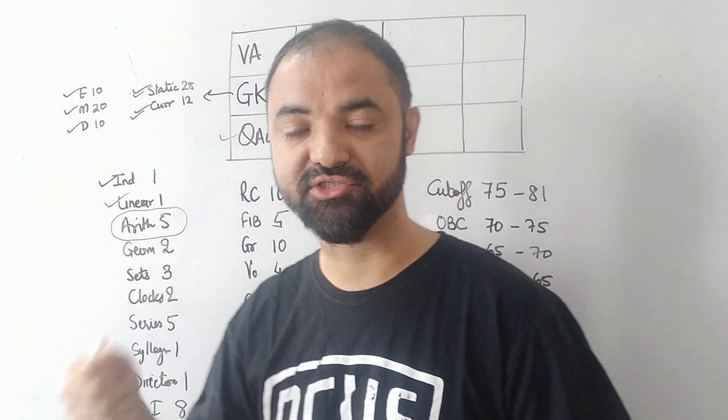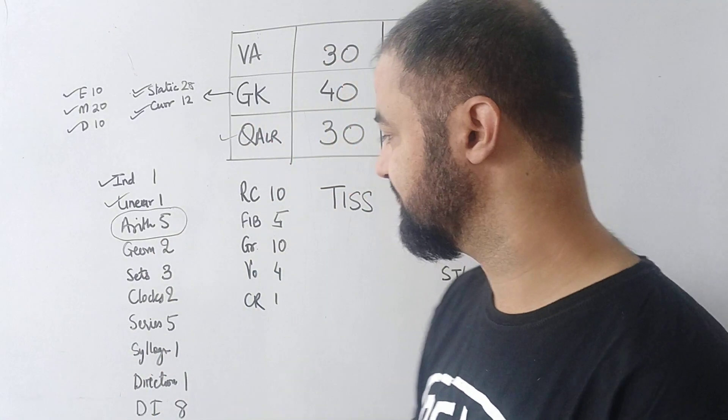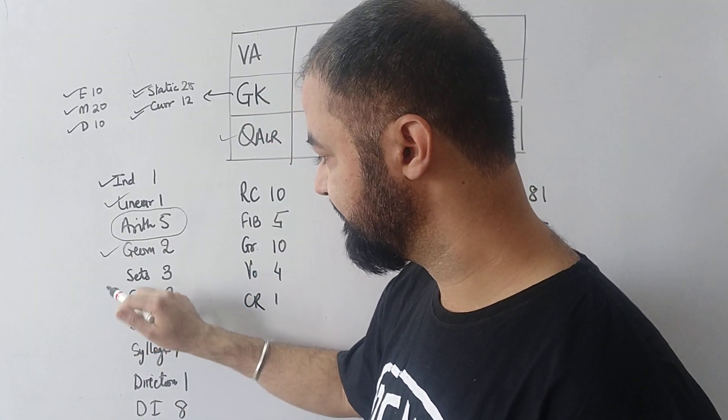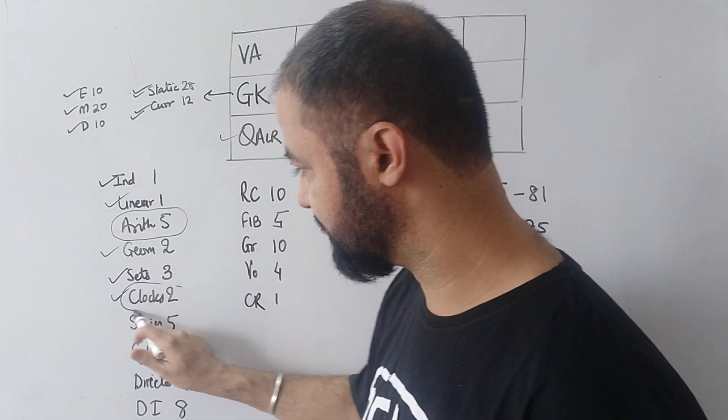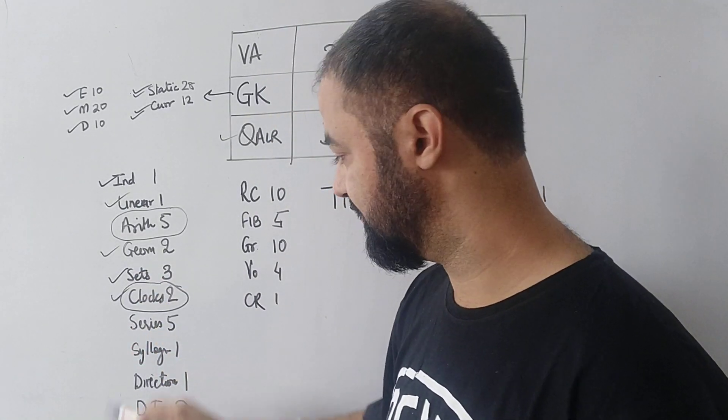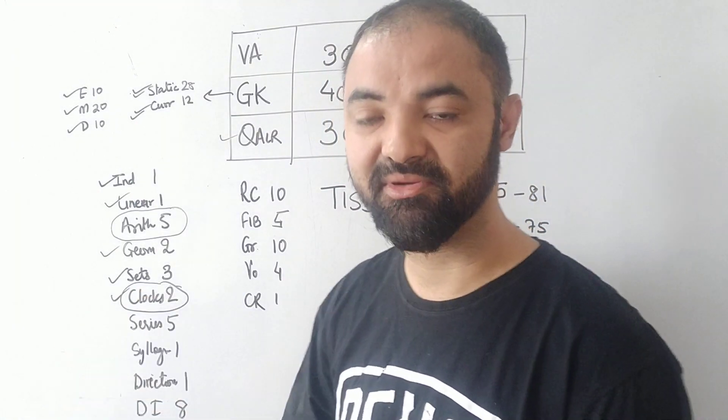Percentages, profit and loss - just go through all the formulas of every chapter. Geometry two questions, set theory three questions, clocks and calendars two questions. You have to work on clocks and calendars as well. Look at the formulas, look at two solid examples.